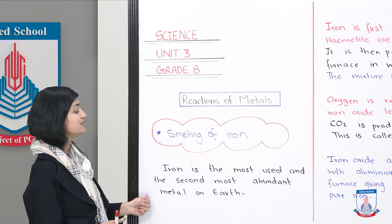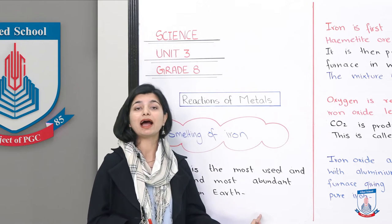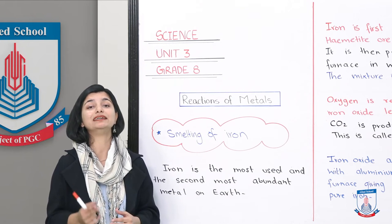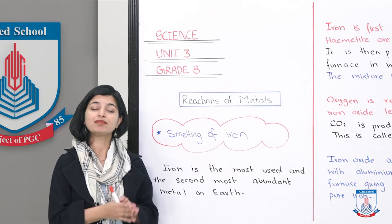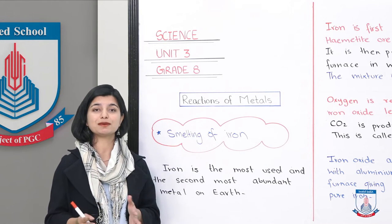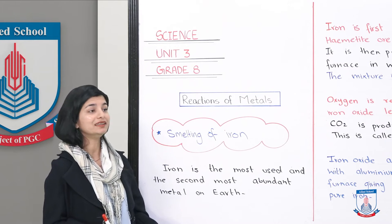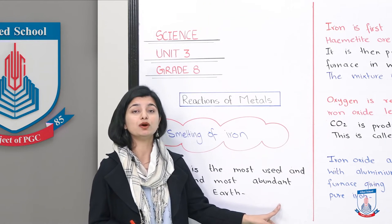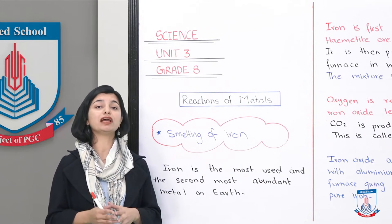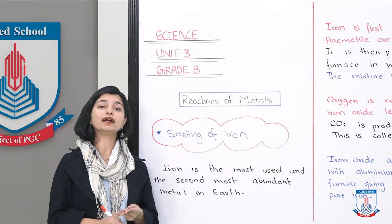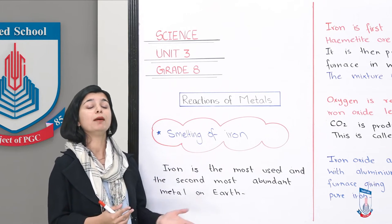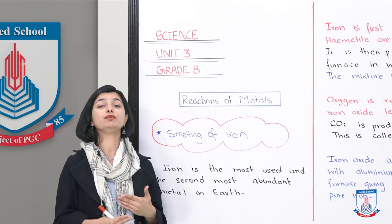Iron is the most used and the second most abundant metal on earth. The most abundant metal in the world is aluminium, and iron is the second most abundant. But iron is used the most. Because of this, it is also less expensive to extract than aluminium. Aluminium is more abundant but much more expensive to extract. Iron, while less abundant than aluminium, is not as costly to extract, which is why it is much more widely used.